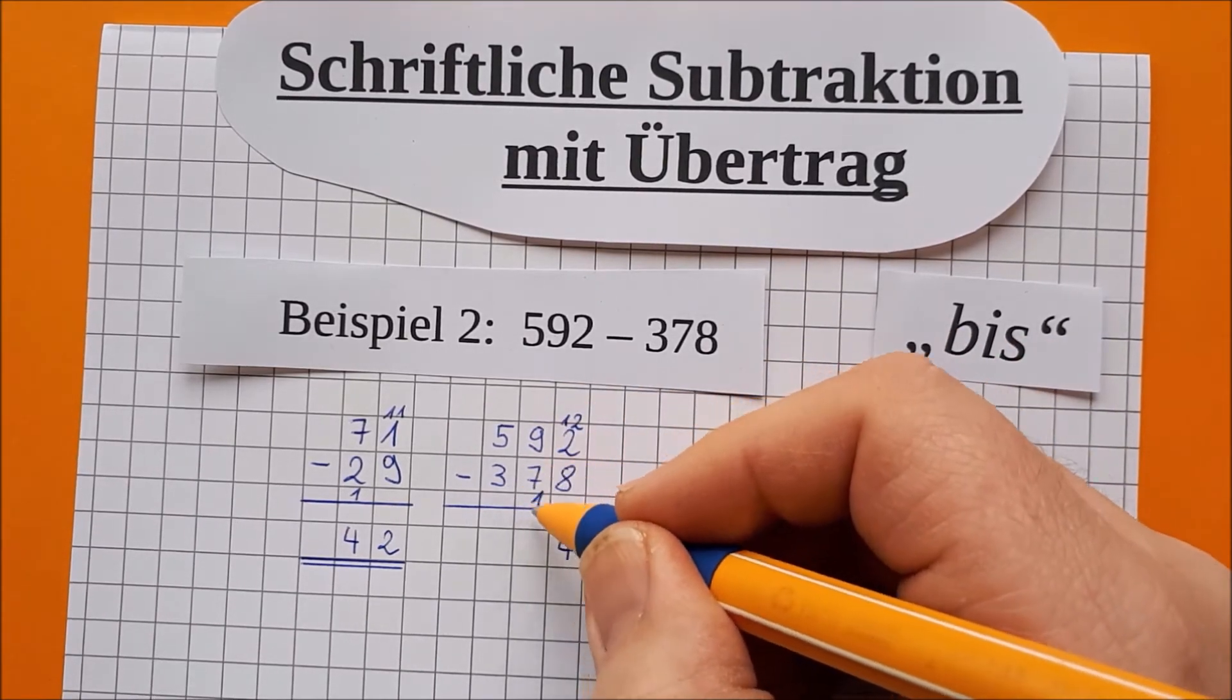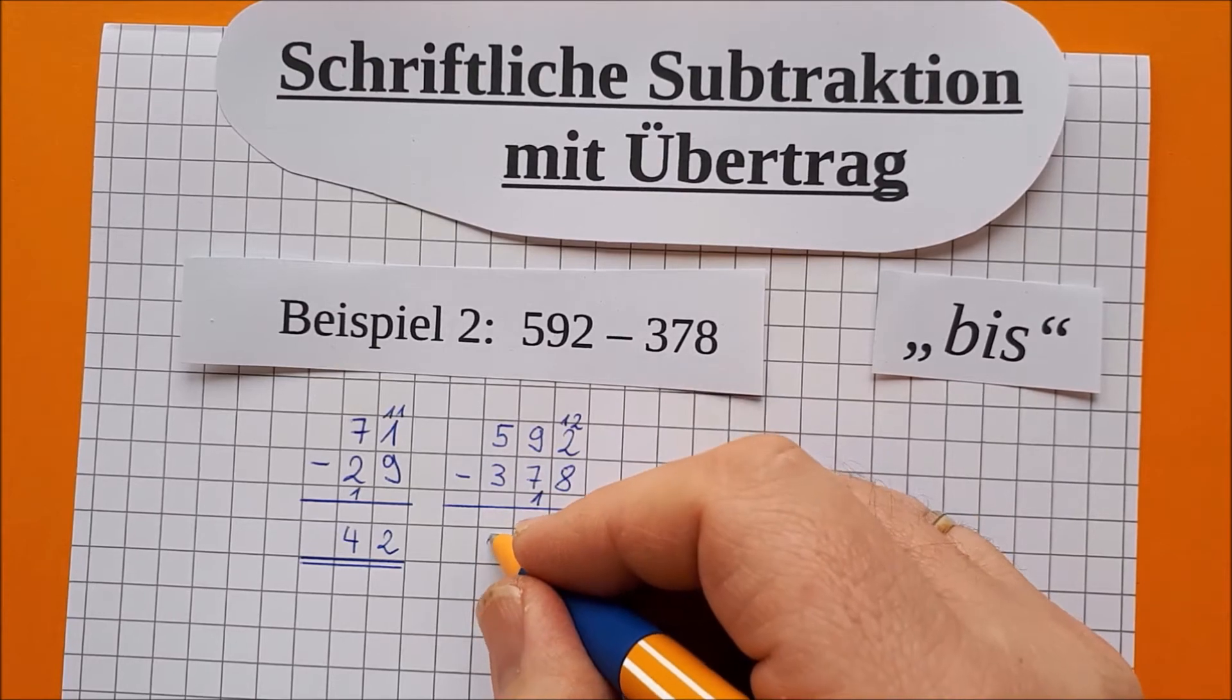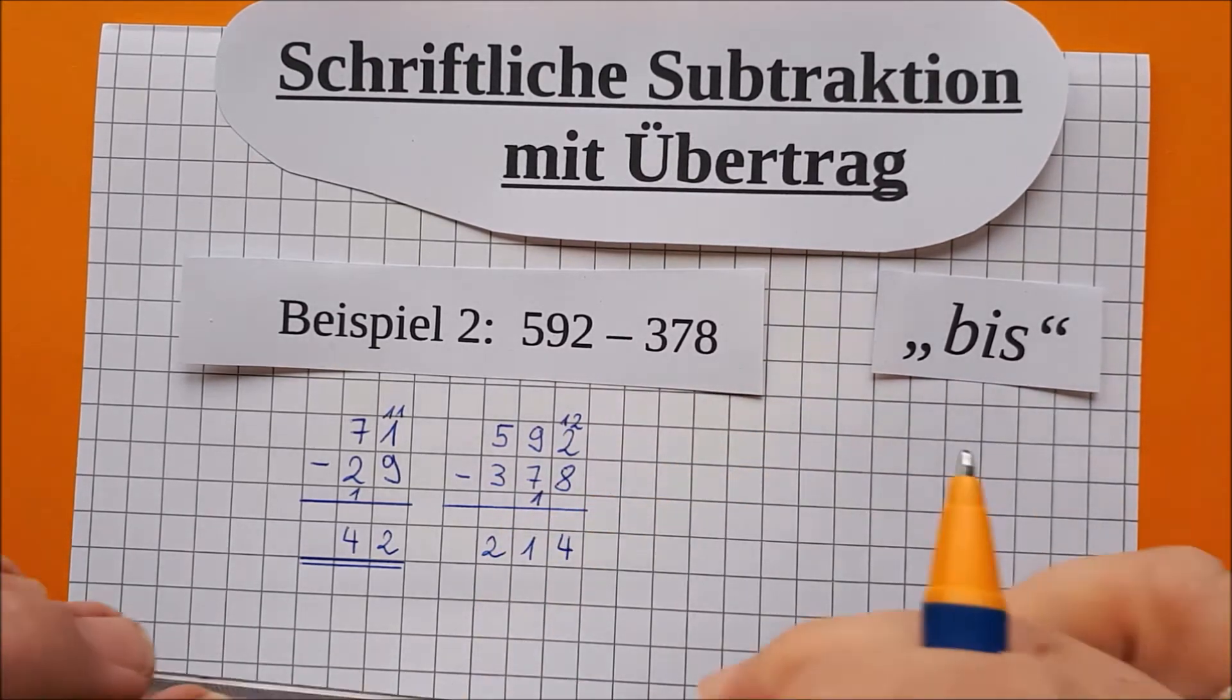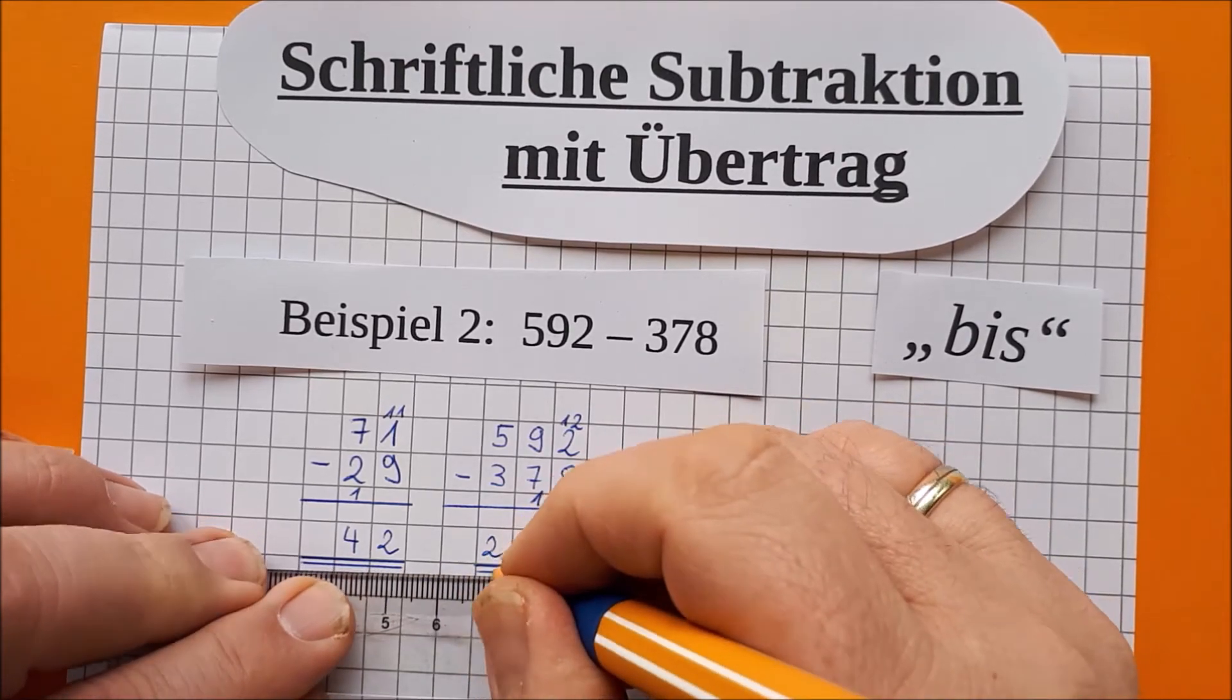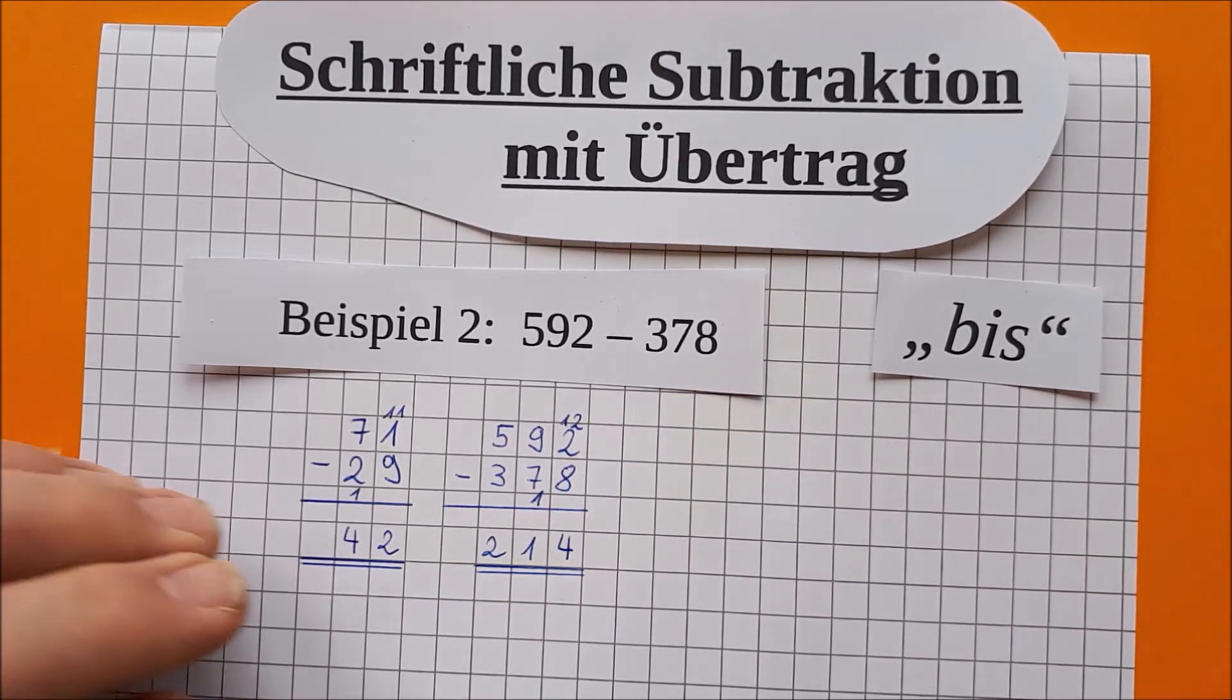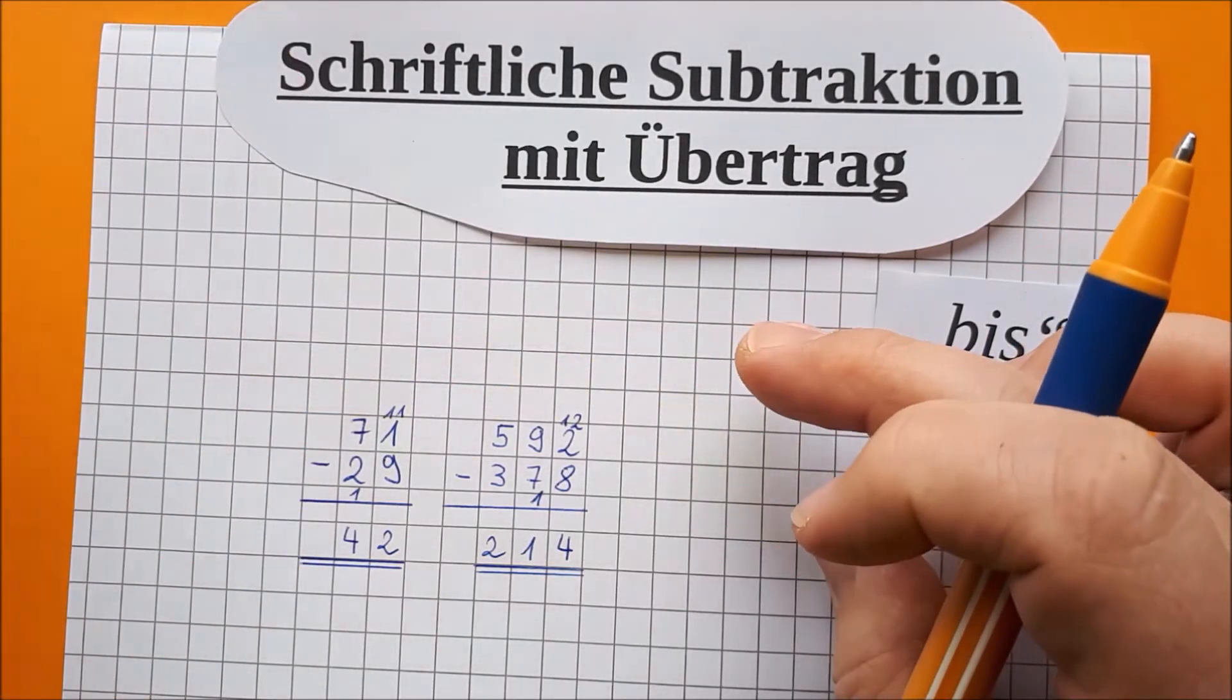Und das sind jetzt 8. 8 bis 9 ist das Gleiche wie 1. Und 3 bis 5, ja, ist das Gleiche wie 2. Das ist geblieben, wie es ist. So. Und fertig. Das war doch schon gar nicht mehr so schwer. Jetzt verkürzen wir es noch ein bisschen weiter.